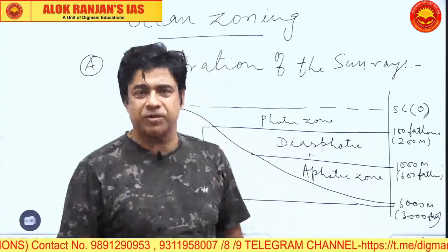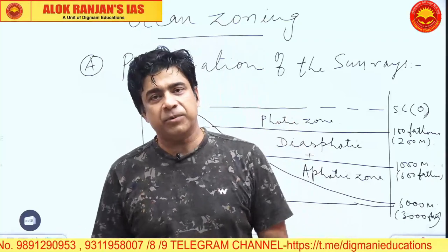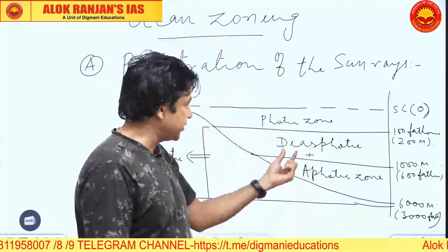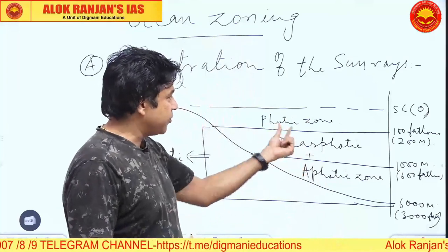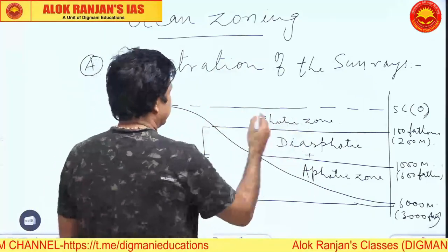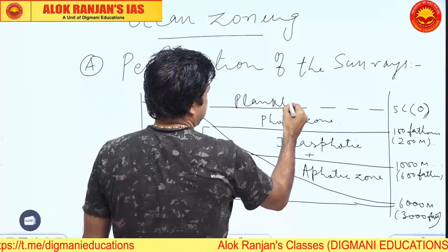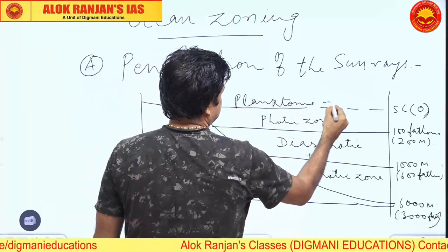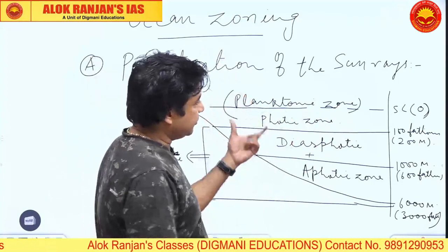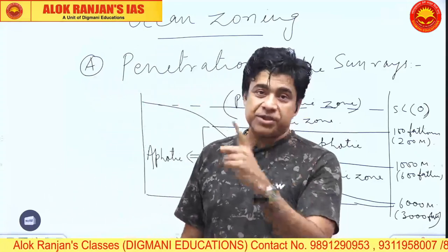Especially primary production by plants and planktons is absent in the aphotic zone. In the photic zone, however, you will find planktons and most of life is active there, so the photic zone is also called the planktonic zone. This completes the first criterion of ocean zoning — based on penetration of Sun rays.